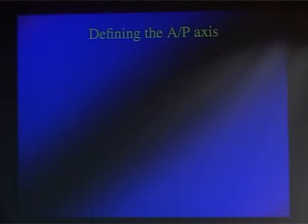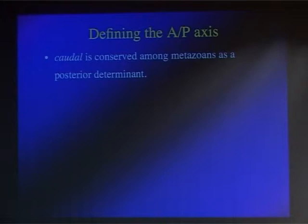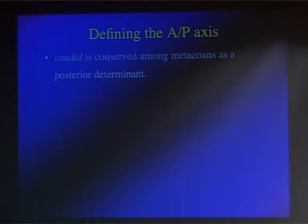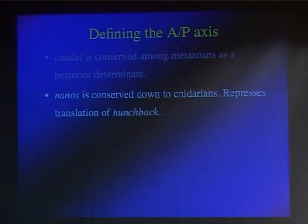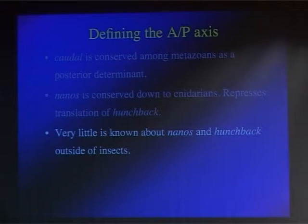Defining the AP axis is often set morphologically before the molecular players kick in. At the molecular level, caudal — also mentioned in the context of nematodes — is a very conserved posterior determinant. It's found basically in all metazoans that have been examined, always expressed in the posterior, and always important for determining the posterior of the embryo. Nanos and hunchback are two other genes that interact with each other, conserved all the way to cnidarians, and the interaction between hunchback and nanos defines the anterior and posterior of the embryo.